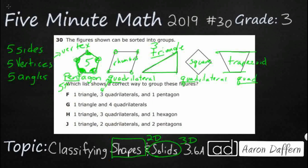So I've got one triangle. Check. I've got three quadrilaterals. One, two, three. Check. And one pentagon. So it looks like F is going to be it. And G and H, it doesn't work. There's no hexagon and I've only got one pentagon. So they do not work. And my answer is F.